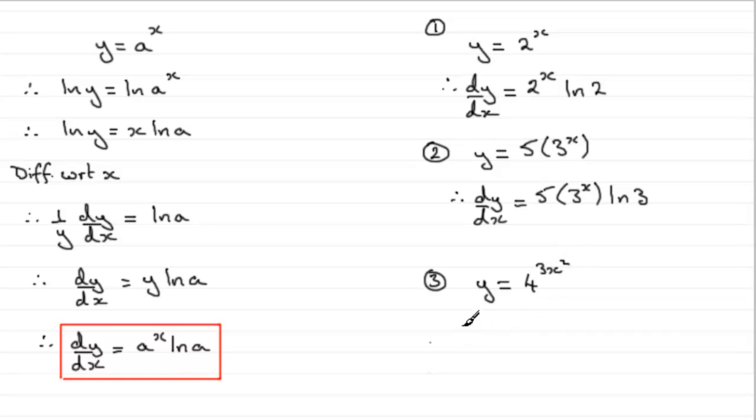Well, we've got to use the chain rule. I've got to think of this as 4 to the power t. So, in other words, I've got y equals 4 to the power t, where t equals 3x squared.